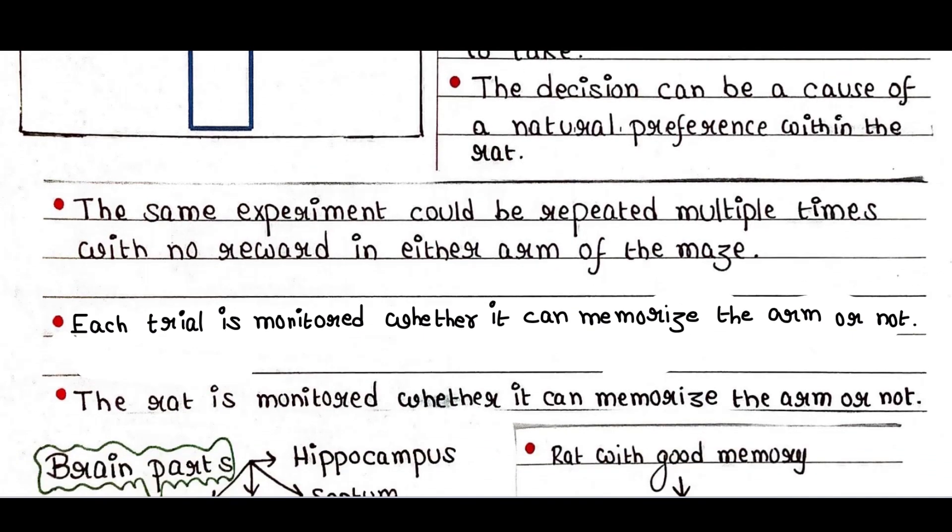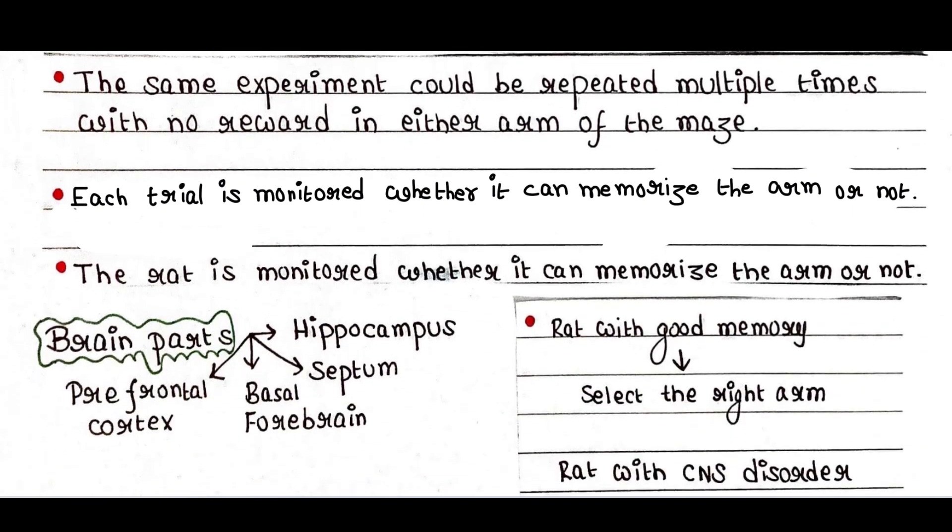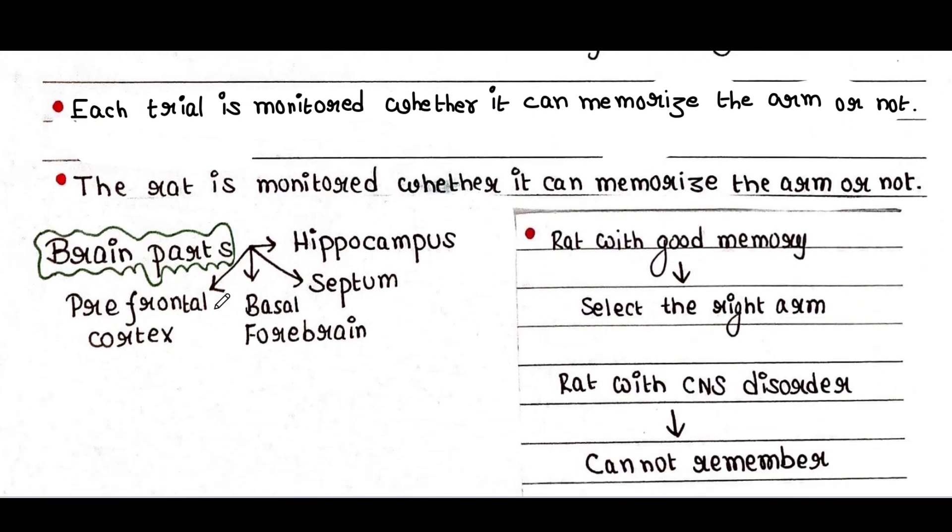We have explained all of these. This is the last thing: many parts of the brain including hippocampus, septum, basal forebrain, and prefrontal cortex are involved in this task.